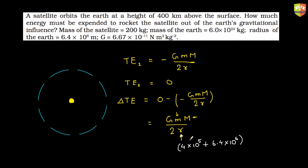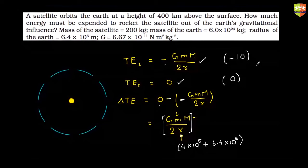r is Rₑ plus the orbital height — it is addition, not subtraction. Since the initial energy is negative and the final energy is zero, the difference is zero minus a negative value, which becomes positive. So the change in energy is positive, meaning you must supply energy to the satellite. For example, if you have −10 and want to reach 0, you add 10.